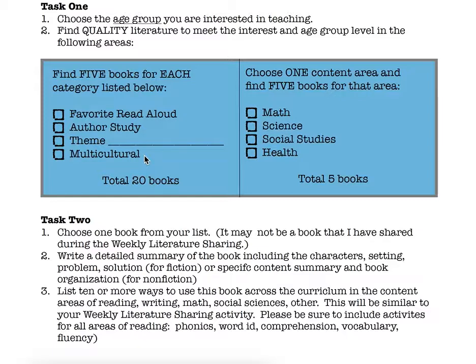Last but not least, you're going to choose one content area. You can choose math, science, social studies, or health. You're going to choose one category and five books that match that category. In my example, I choose math and pick five books I could use to teach math. But you can pick any of these categories. So that's your first task — finding that literature.